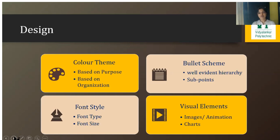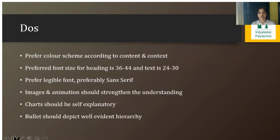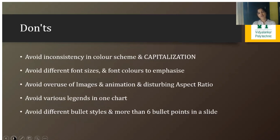For font size do's and don'ts: headings should not exceed 36 to 44 points, and text or subtopics should stay between 24 to 30 points. Legible, sans-serif fonts are preferable. Images and animations should strengthen the concept and extend understanding, not distract from the main content. What should be avoided: overusing color, capitalization, or emphasis can mar the effectiveness of content. When inserting images, always maintain the aspect ratio — disturbing it causes images to appear blurred.